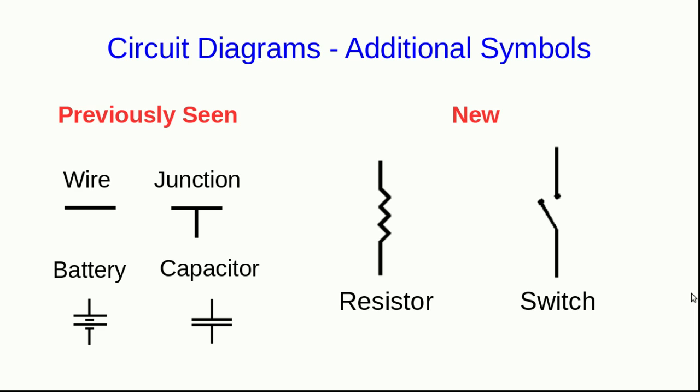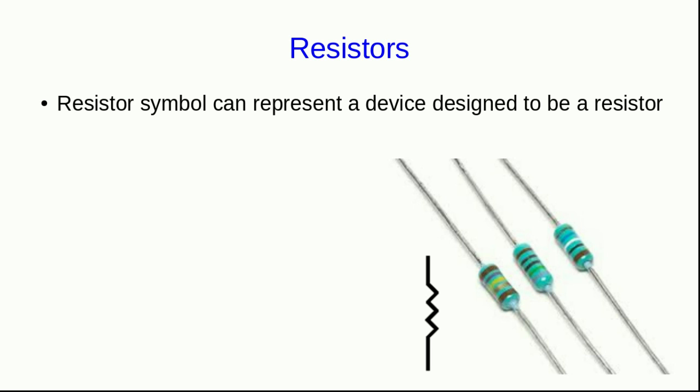We need a few new symbols for our circuit diagrams, because now we have resistors, and you've probably already seen them on assignments, but I haven't talked about them in the video lecture. We're going to use switches. There are devices which we call resistors, which are very common in circuits, and which are just there to resist the flow of current.